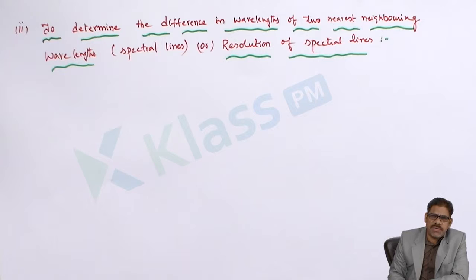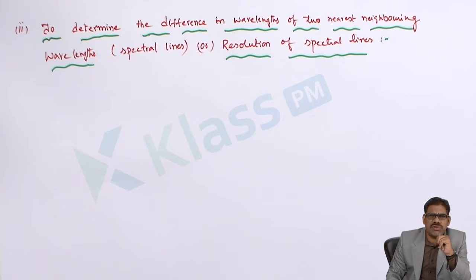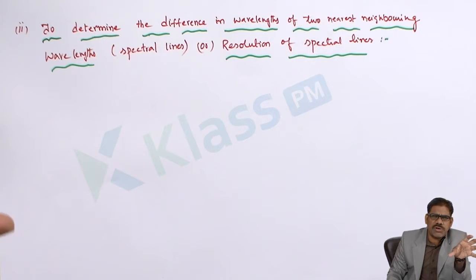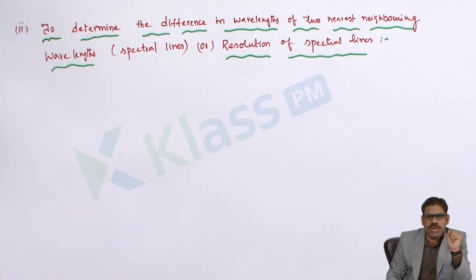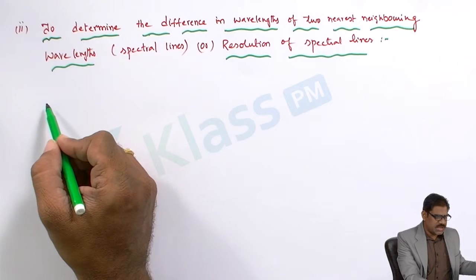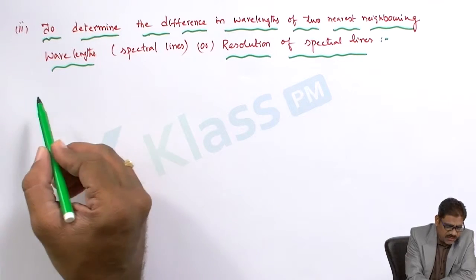In a Michelson interferometer, let us suppose that a particular source of light — such as sodium light — possesses two wavelengths. Let those wavelengths be lambda 1 and lambda 2 respectively. If it is emitting two wavelengths very close to each other, we want to find the difference between them.